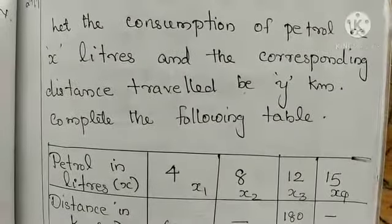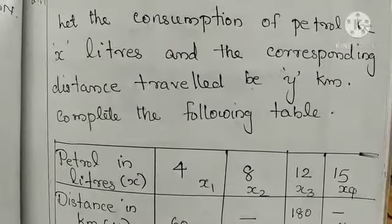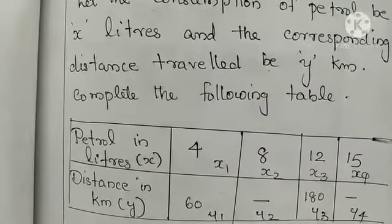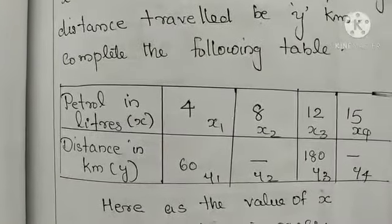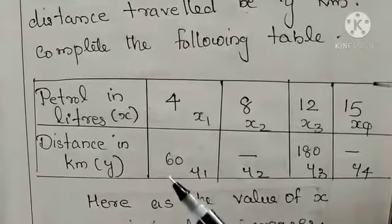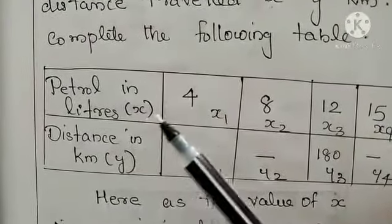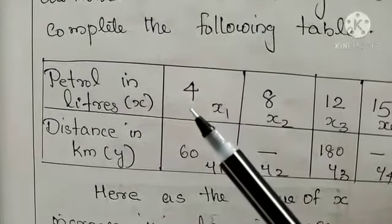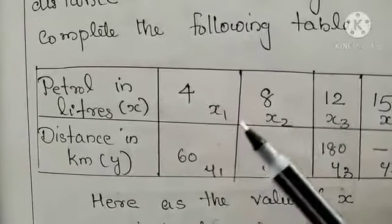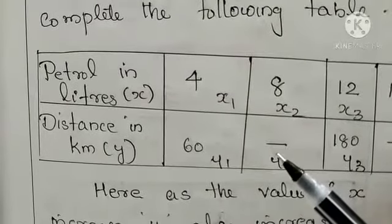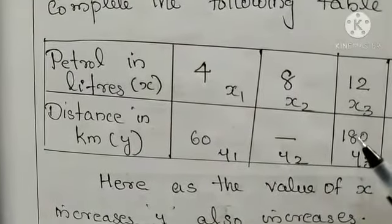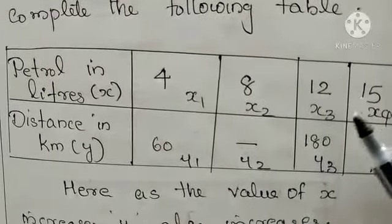You can do one example. Let the consumption of petrol be x liters and the corresponding distance traveled be y kilometers. Complete the following table. So here one table is given, we have to calculate the unknown values in this table. Here we have petrol in liters x. First one, 4 liters. Corresponding value of y is 60 kilometers. Second one, 8, y2 we have to calculate. Third one, 12. Then y3, 180. Fourth column, 15.